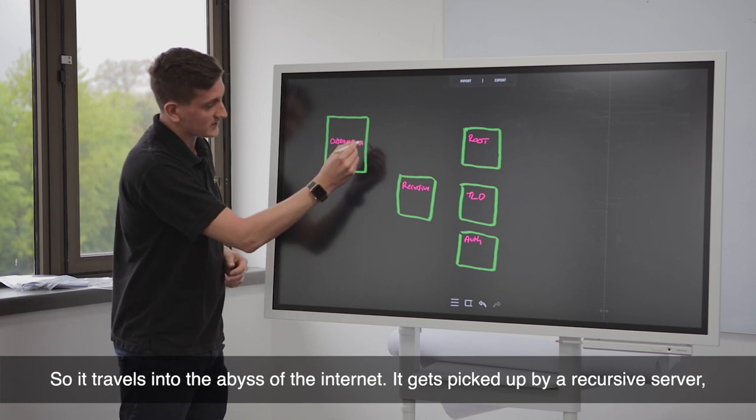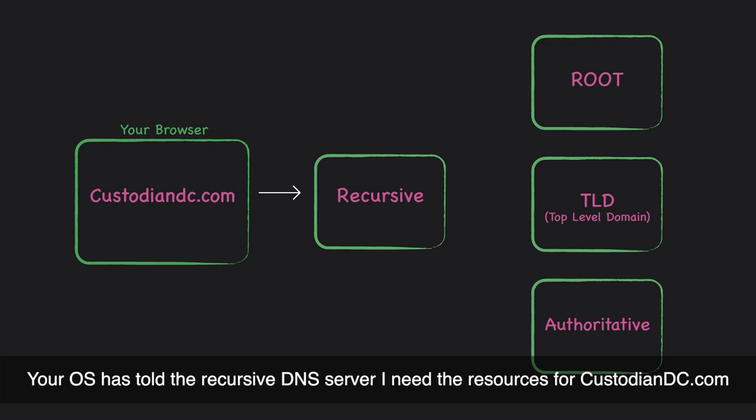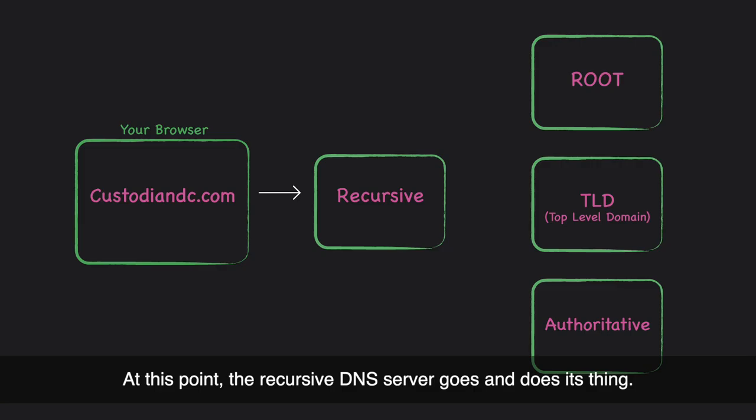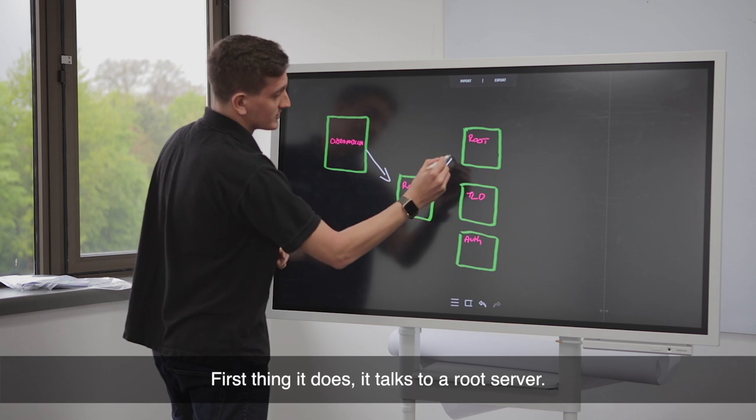It gets picked up by a recursive DNS server. That's step one. Your operating system has told the recursive DNS server, I need the resource for custodiandc.com. At this point, the recursive DNS server goes and does its thing. First thing it does, it talks to a root server.